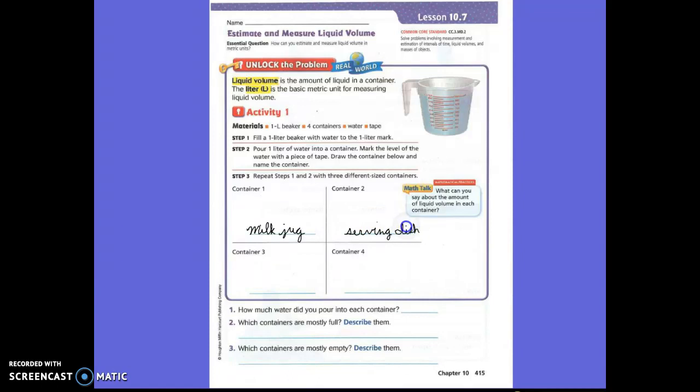On container two, we're going to call that a serving dish. Yeah, like what you would put like a salad in or something. Number three, we're going to call a dog bowl.